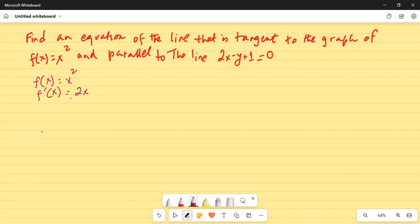Because the slope of the given line, 2x minus y plus 1 equal to 0, is 2.